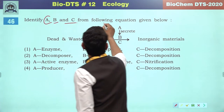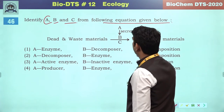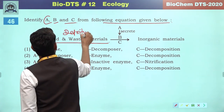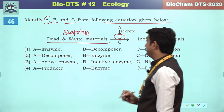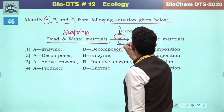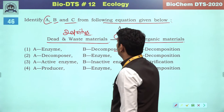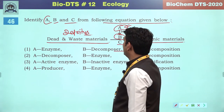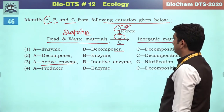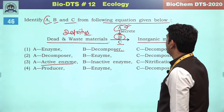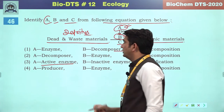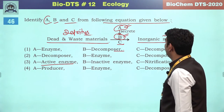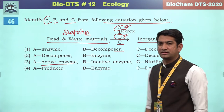Identify A, B and C from the given equation. The dead and waste material will be detritus (A). This detritus is decomposed by decomposers (B). The decomposers then release the decomposed organic material. So the correct answer will be the second option.